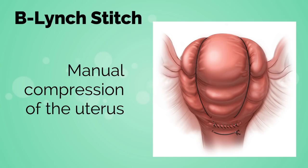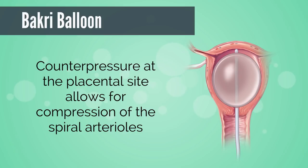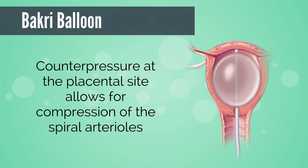A B-Lynch stitch causes manual compression of the uterus using sutures that go over the uterus like suspenders, aiding in re-approximating smooth muscle fibers. The Bakri balloon, though counterintuitive, can also be used — its main role is to provide counter pressure at the placental site, compressing the spiral arterioles, decreasing flow, improving clotting, and achieving hemostasis. This measure can also provide time for uterotonics to take effect.